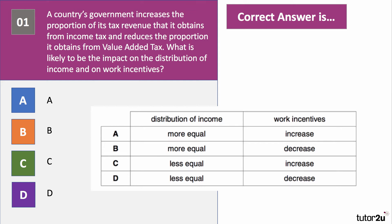The government is now taking more in direct income taxes and less in indirect VAT. Income tax tends to be progressive — the rate of tax rises with income — and VAT is mildly regressive, tending to have a heavier burden on relatively poorer households. So the distribution of income will become more equal.